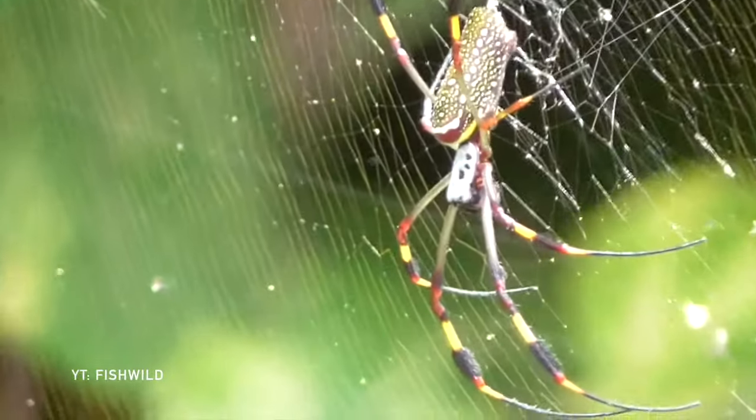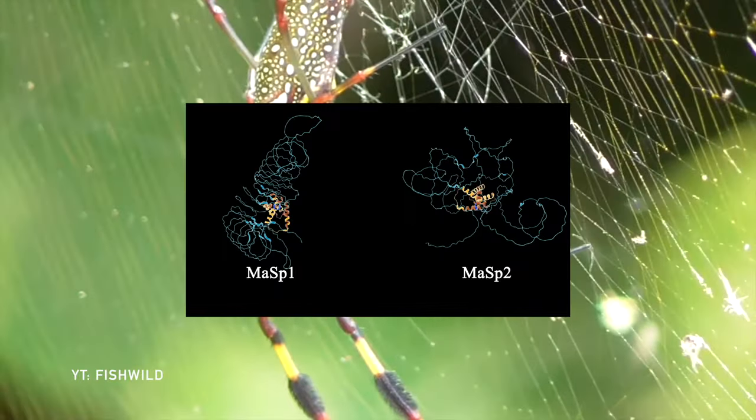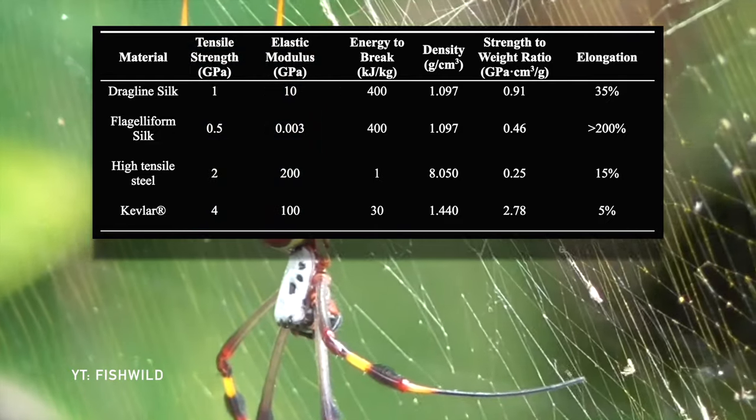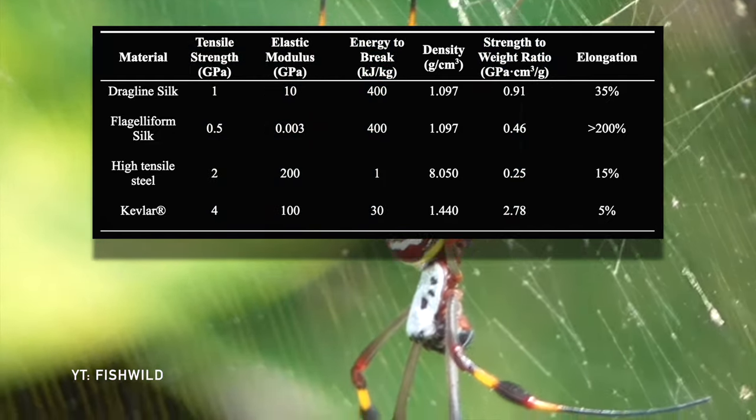Dragline silk is one of the most impressive materials on earth, especially considering it is found only in nature. Due to its unique protein structure, its balance of strength and elasticity is unique, its strength to weight ratio is impressive, and its toughness is rivaled only by other spider silks.